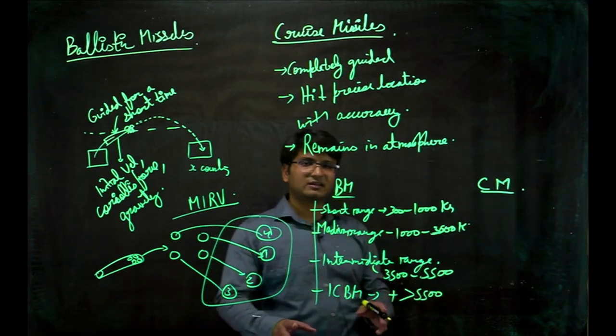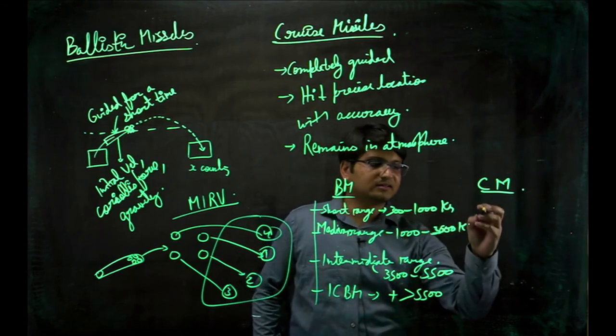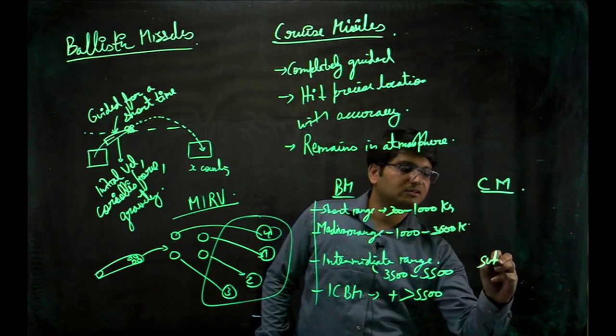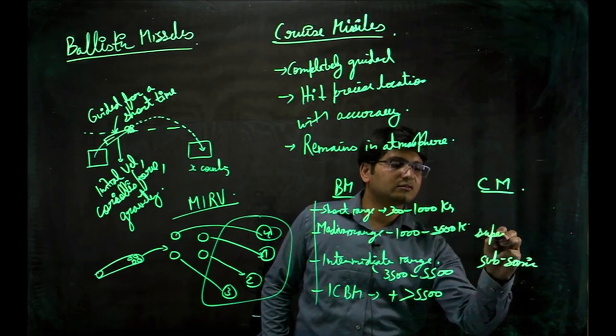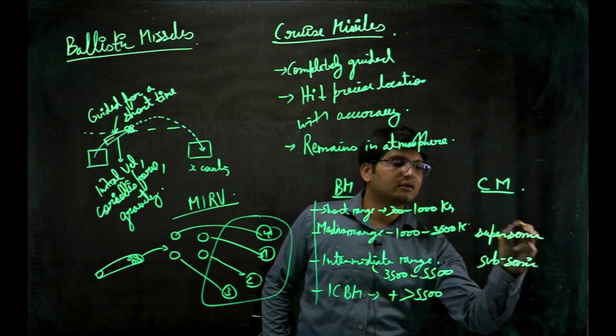So these are the various types of ballistic missiles. Various types of cruise missiles are subsonic, supersonic, and hypersonic.